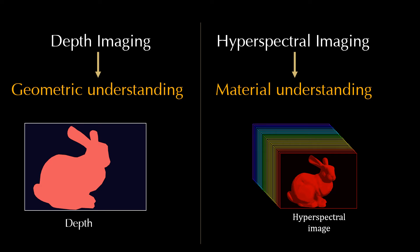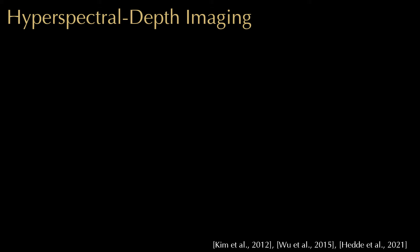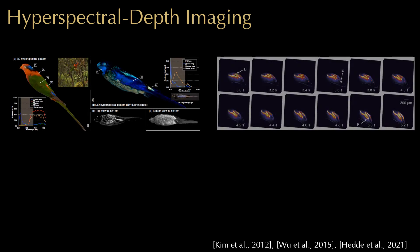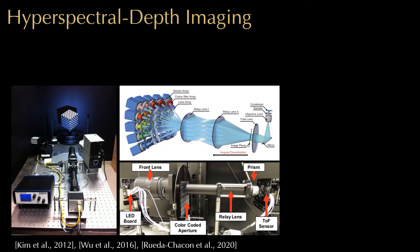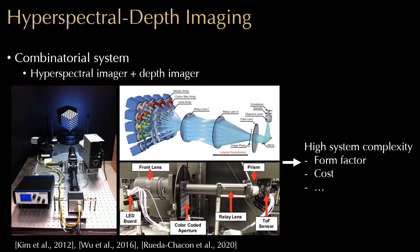Remarkable progress has been made for each imaging modality, where geometric and material understandings are required separately. However, it is often essential to achieve a simultaneous understanding of both geometric and material properties of the real world. This leads to an emerging area of hyperspectral depth imaging with applications in ornithology, geology, biology, and cultural heritage. A typical architectural choice is to combine a hyperspectral imager and a depth imager. While this maintains the imaging performance of each modality, it results in inevitable increases of system complexity, including form factor and cost. In this work, we aim to overcome this challenge.